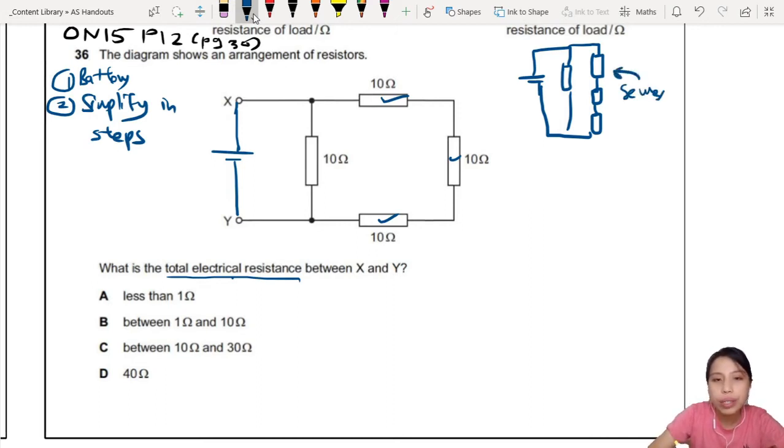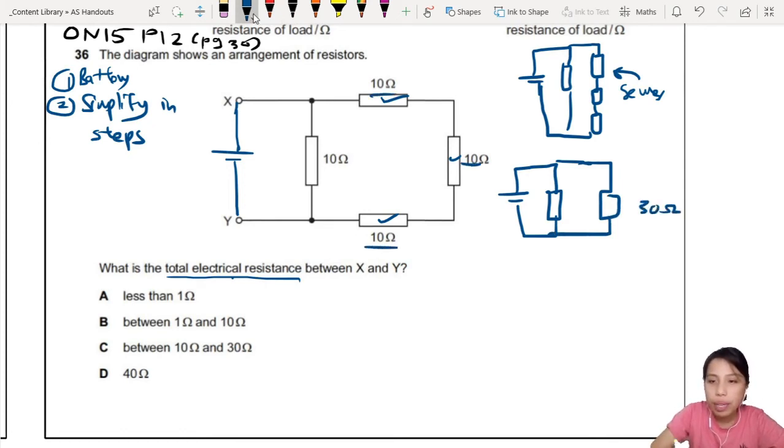So first step, if you want to find total electric resistance, you have to combine all these somehow. First step: combine all the series ones first. So you add together and it becomes one effective resistor. So what is this one effective resistor? 10 plus 10 plus 10 equals 30 ohms. So it's 30 ohms, then this one is still the same, 10 ohms.